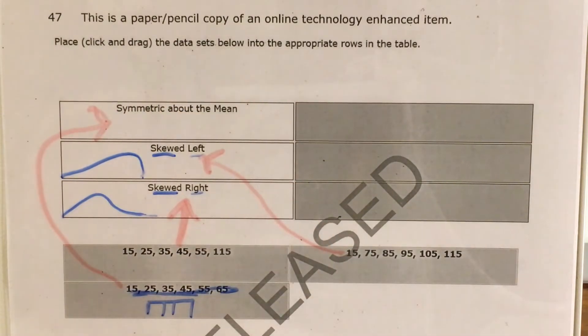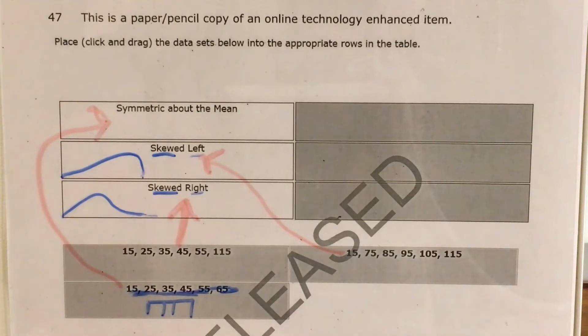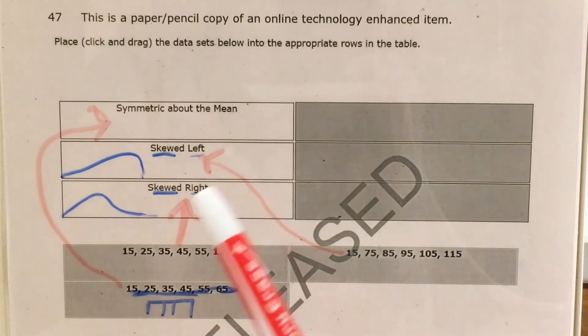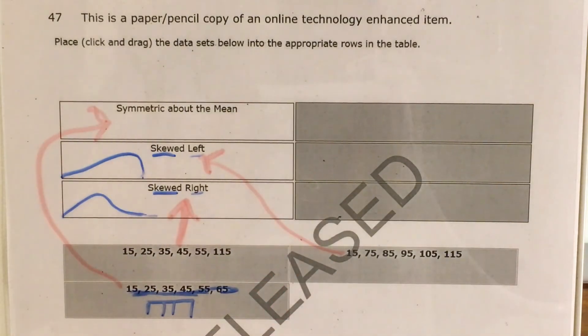So that's essentially how to use your calculator to have a look at the data distributions that you might be given in a problem like this, and what skewed left, skewed right, and symmetric about the mean look like.